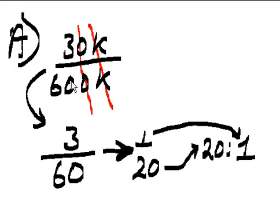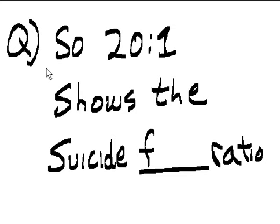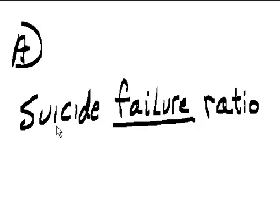Take 30,000 over 600,000, cancel, you get 3 over 60, which reduces to 1 over 20. The denominator comes up to the front, the numerator to the right, colon in between: 20 to 1 rate ratio. Question: So 20 to 1 shows the suicide what ratio? Answer: The suicide failure ratio.